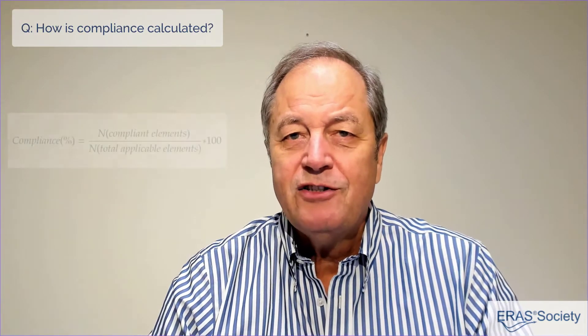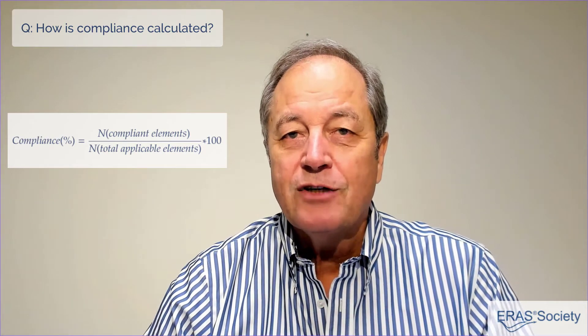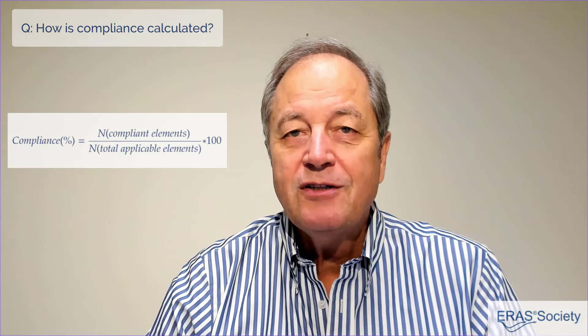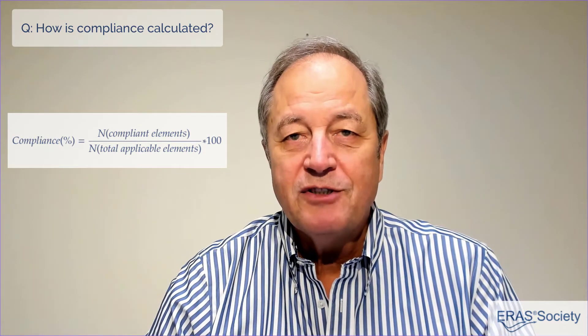The guidelines consist of a number of different care elements, and we've been finding through a lot of research around the world that the better you comply with these elements in your care process, the better the outcomes are going to be. We measure compliance with these elements, and the way we calculate it is very simple: looking at the number of elements you're actually fulfilling with each patient and dividing it by the number of elements of care for that specific process.